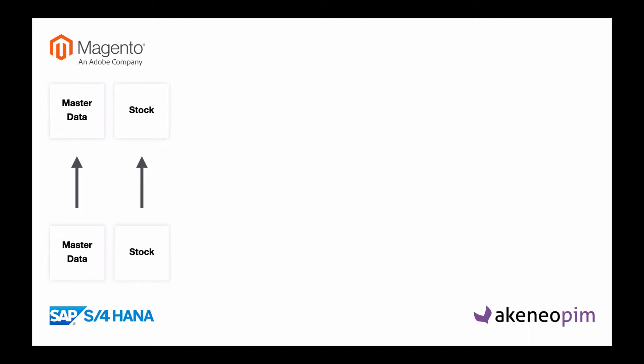Besides that, we also want to have the stock information. The ERP system is responsible for managing the stock and has the most accurate data about the product stock. Then we have orders. Usually when an order is placed in Magento, we want to push it to the ERP system. But depending on how advanced your ERP integration is, sometimes you also want orders saved in the ERP pushed back into Magento, so that customers see their omni-channel orders. Then we have the delivery — Magento has to know the delivery status to inform customers about when they can expect their order to be shipped.